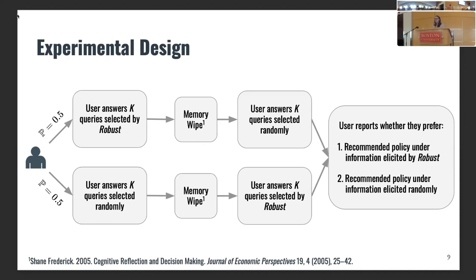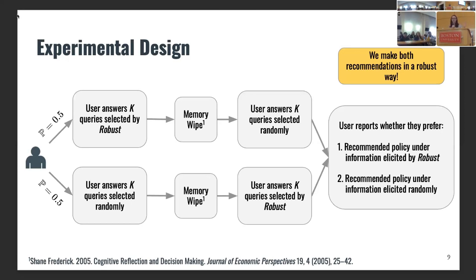No matter which stream they're sorted into, the last query the participant sees is a pairwise comparison between the policy that is optimal under information collected by the robust procedure and the policy that is optimal from the random procedure. In this last query, participants directly report which policy more aligned with their preferences — essentially, which algorithm did a better job of figuring out what their preferences are. As a side note, even for random elicitation we make the recommendation in a robust way, so it's an apples-to-apples comparison of the elicitation procedures.